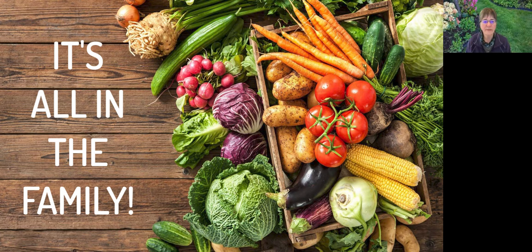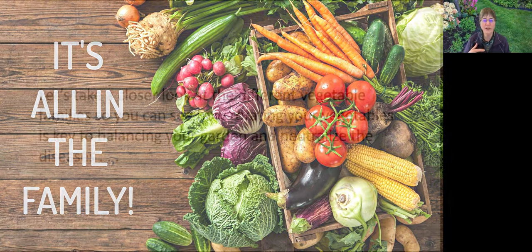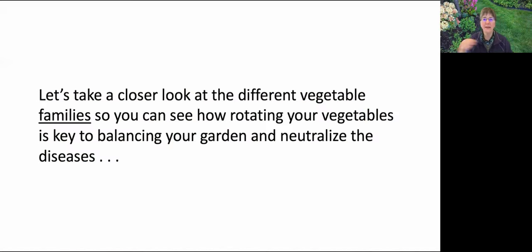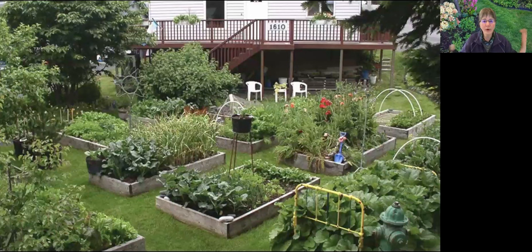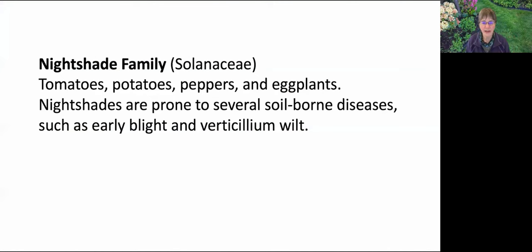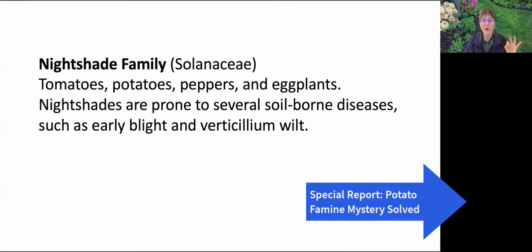We're going to look at different vegetable families. You can see how rotating your veggies is really important — it's key to balancing your garden and neutralizing diseases. Then we'll put it all together so you can decide what form of crop rotation works best for your situation. Let's start with the nightshade family, Solanaceae: tomatoes, peppers, potatoes, and eggplants. They're prone to several soil-borne diseases like early blight and verticillium wilt.